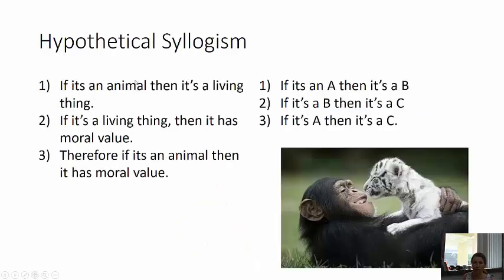Here's another example. If it's an animal then it's a living thing, if it's a living thing then it has moral value, therefore if it's an animal then it has moral value. Here again: if it's an A then it's a B, if it's a B then it's a C, therefore if it's an A then it's a C.